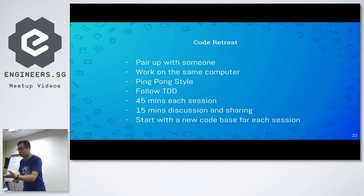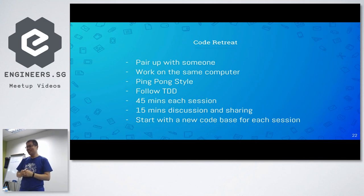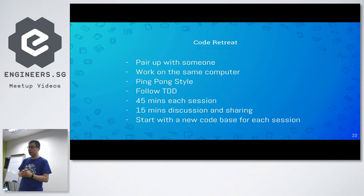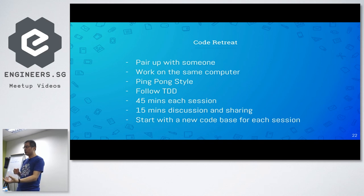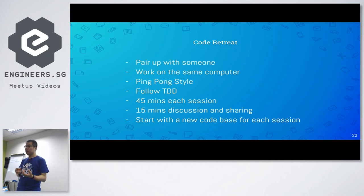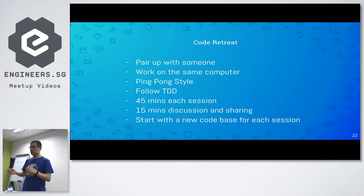For example, if I'm pairing with Ping — Ping will write the test case which fails. Then I'm going to write the code to make the test case pass. Then I'll do some refactoring to make the code cleaner. And then I'm going to write a new test case. After I write this new test case, it's Ping's turn: she will make the test case pass, make the code cleaner, and then write the third test case. Then it's my turn to make it pass. It's like ping pong — each of you gets a chance to do something. Typically you write a test case, make it fail, and then it's your pair's responsibility to make it pass.